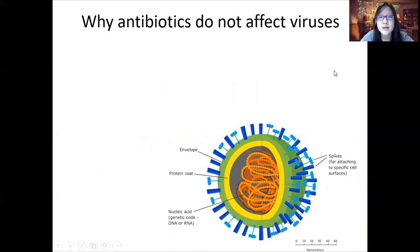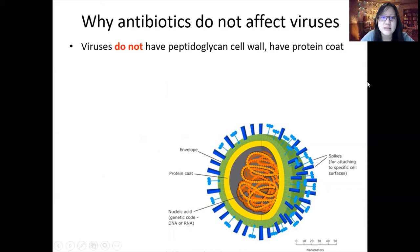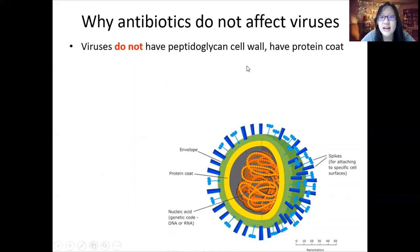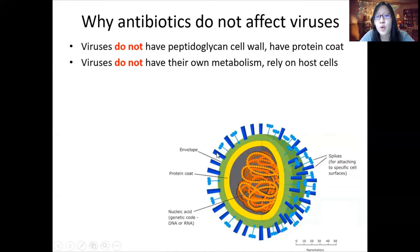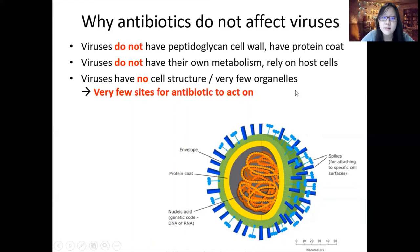Now let's talk about why antibiotics don't affect viruses. Viruses have a very simple structure — inside there is nucleic acid with DNA or RNA, outside that a protein coat, and right outside that an envelope with glycoproteins, sometimes called spikes. Antibiotics like penicillin cannot affect viruses because viruses do not have a peptidoglycan cell wall — instead they have a protein coat, so the drugs don't work against them. Also, viruses do not have their own metabolism, so they don't have a lot of enzymes for antibiotics to act on. There are no processes happening in the virus itself — it relies only on host cells, with very few organelles.